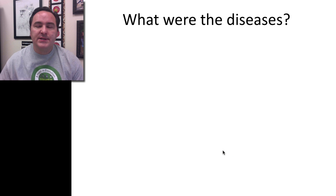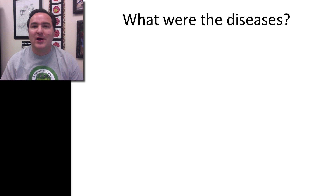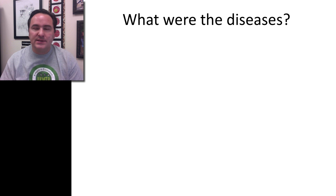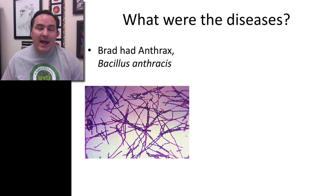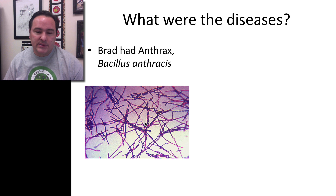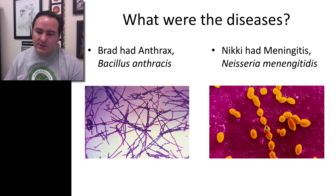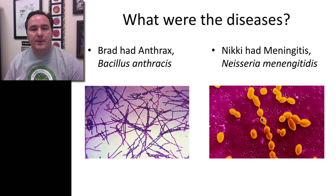So what were the diseases these two patients had? Brad had anthrax — Bacillus anthracis — and you can see what the bacterial strains look like here. Nikki had meningitis, which is Neisseria meningitidis. Here are the little bacteria in chains, but in the spherical form instead of the rod-shaped form.